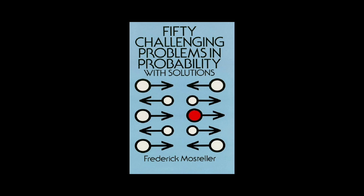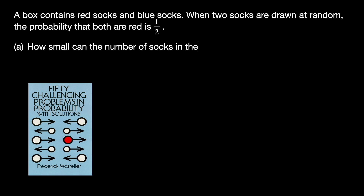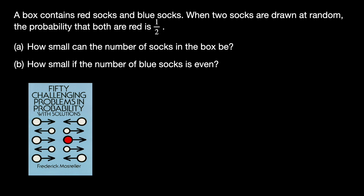Hi everyone, today we're solving a problem from the book '50 Challenging Problems in Probability.' A box contains red socks and blue socks. When two socks are drawn at random, the probability that both are red is one half. How small can the number of socks in the box be? How small if the number of blue socks is even?